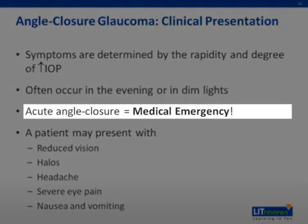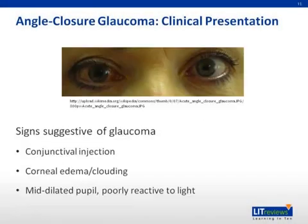Acute angle closure glaucoma is considered a medical emergency. The signs suggestive of acute angle closure glaucoma include conjunctival injection, corneal edema or cloudiness, and a mid-dilated pupil that reacts poorly to light. These can be precipitated in the evening as dim lights cause pupillary dilation, blocking a narrow angle.